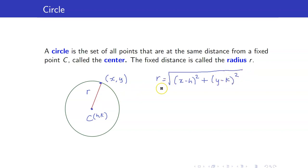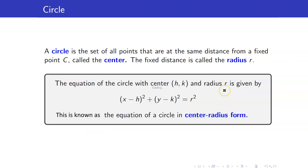The distance between the point X, Y and H, K is our radius R. From our distance formula, the distance between the two points X, Y and H, K, which equals R, is the square root of the difference of X coordinates squared plus the difference of Y coordinates squared. Hence, when we square both sides, we get R squared equals X minus H squared plus Y minus K squared. We have now derived the equation of our circle with center H, K and radius R — this is the center-radius form.